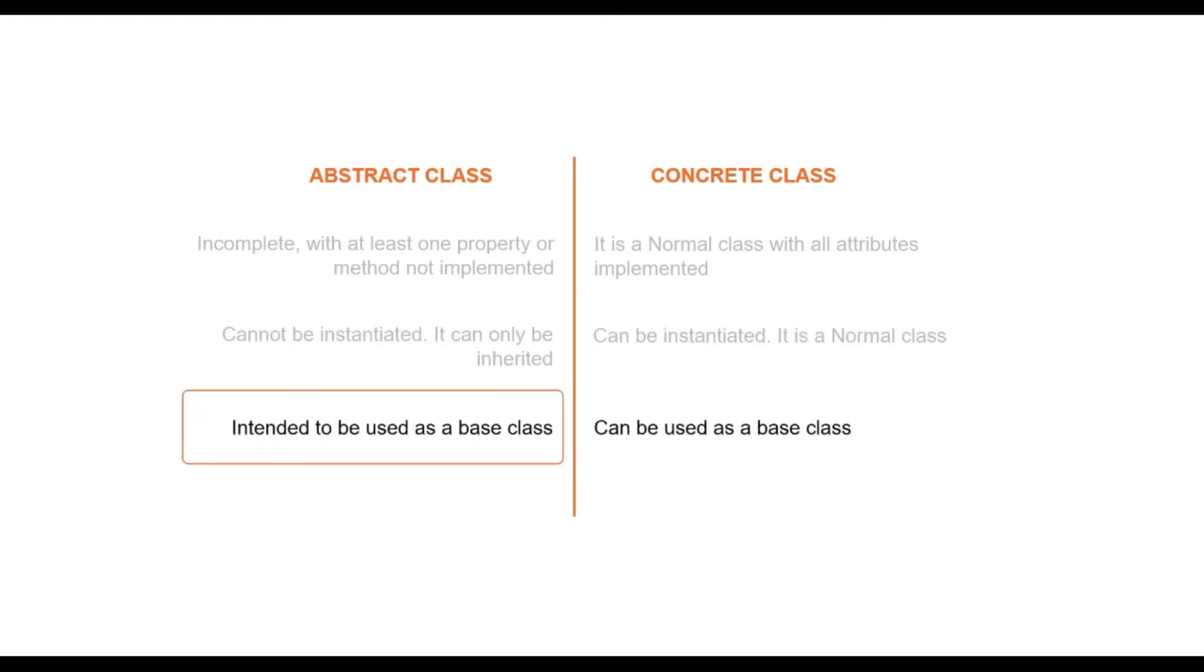Abstract class is intended to be used as a base class. It means abstract class are not real business entities. We will look into this in our code. To conclude the differences, we can say that abstract class has the capability to provide abstraction to our application, which helps us by allowing us to vary the implementation based on our need. If it is confusing to you right now, then please stay with me till the end. I assure you that you will understand the concept very clearly.